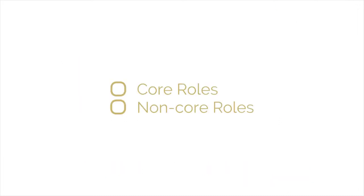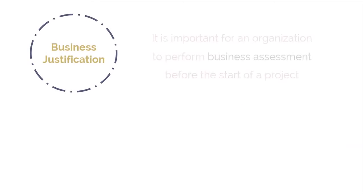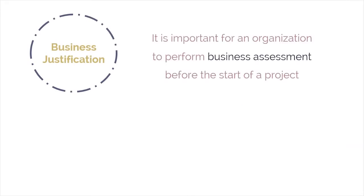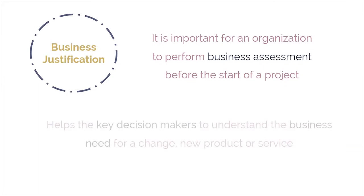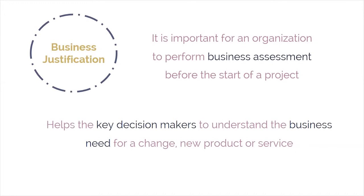Now that we have seen the core and non-core roles in a Scrum-controlled project, let's discuss another key Scrum aspect: business justification. It's important for an organization to perform a proper business assessment prior to starting any project. This helps key decision makers understand the business need for change or for a new product or service, the justification for moving forward with a project, and its viability. Business justification in Scrum is based on the concept of value-driven delivery.